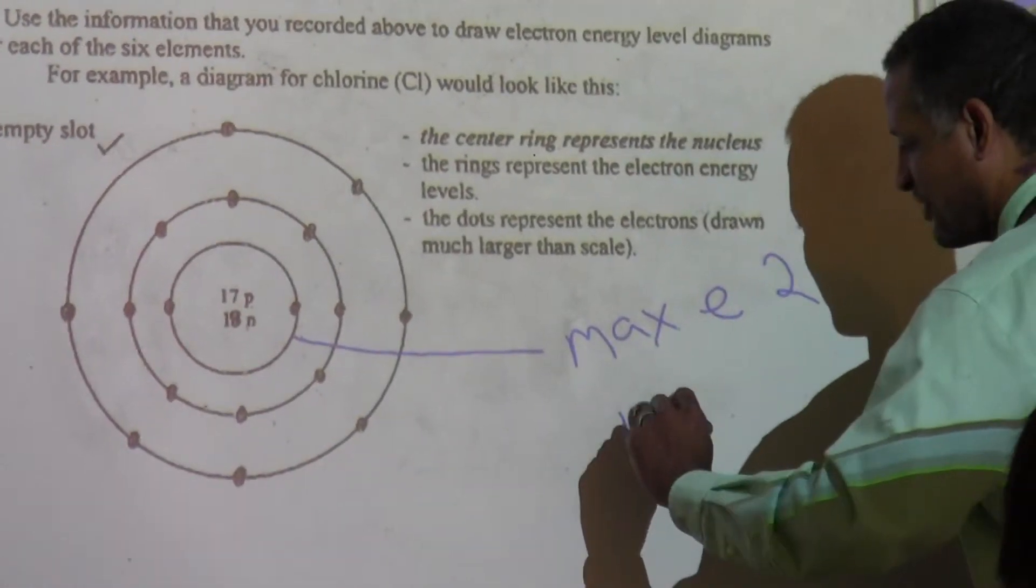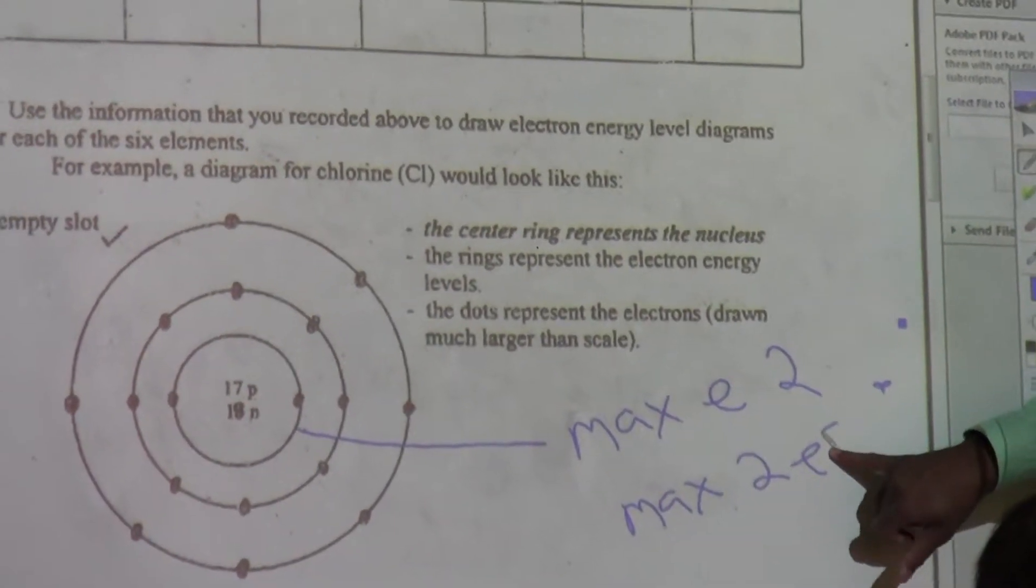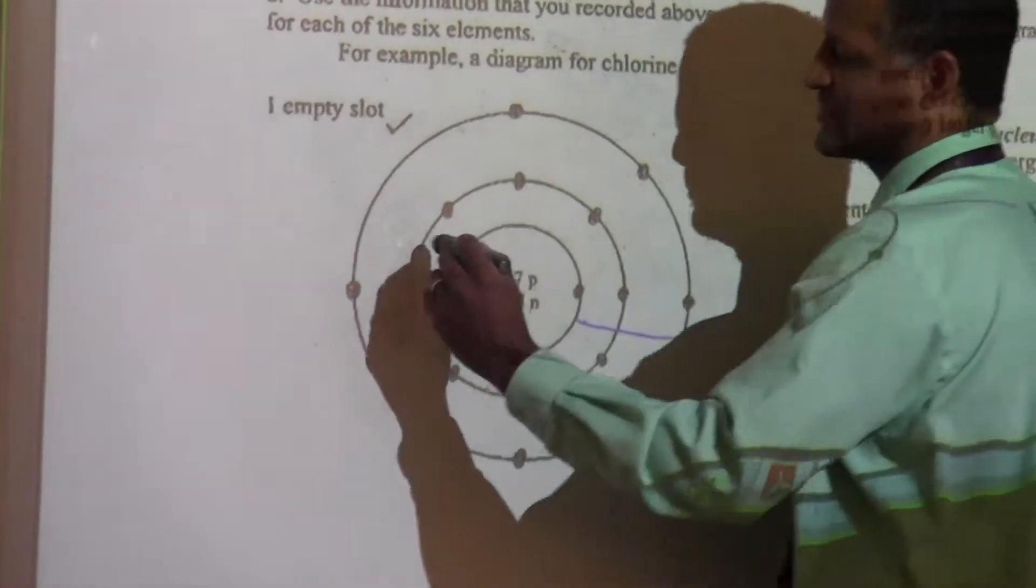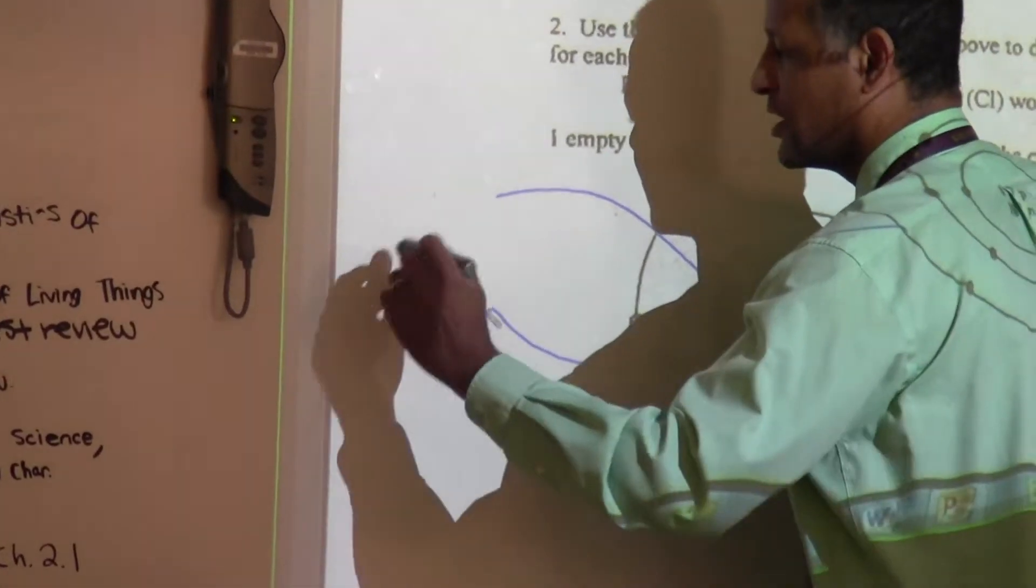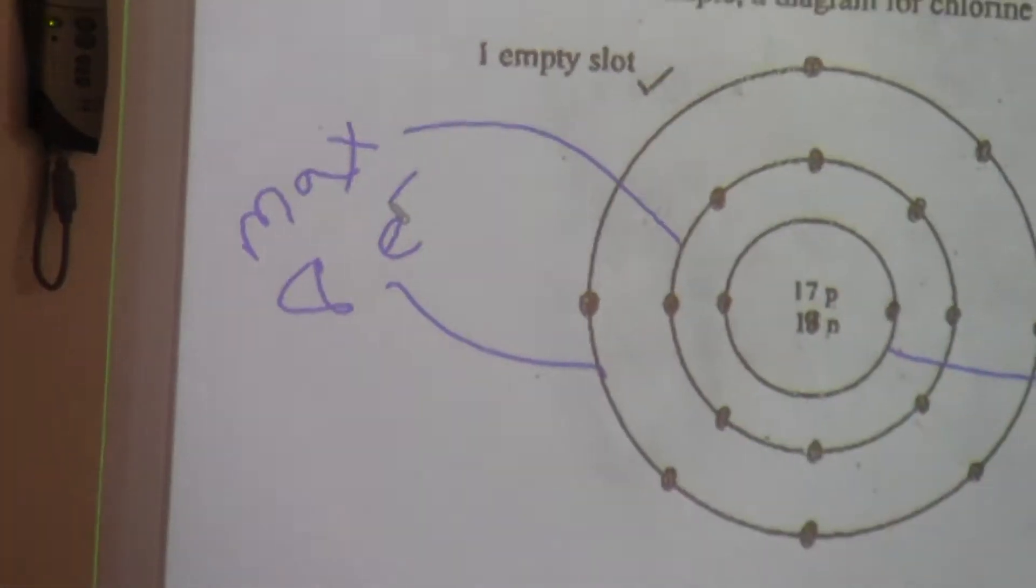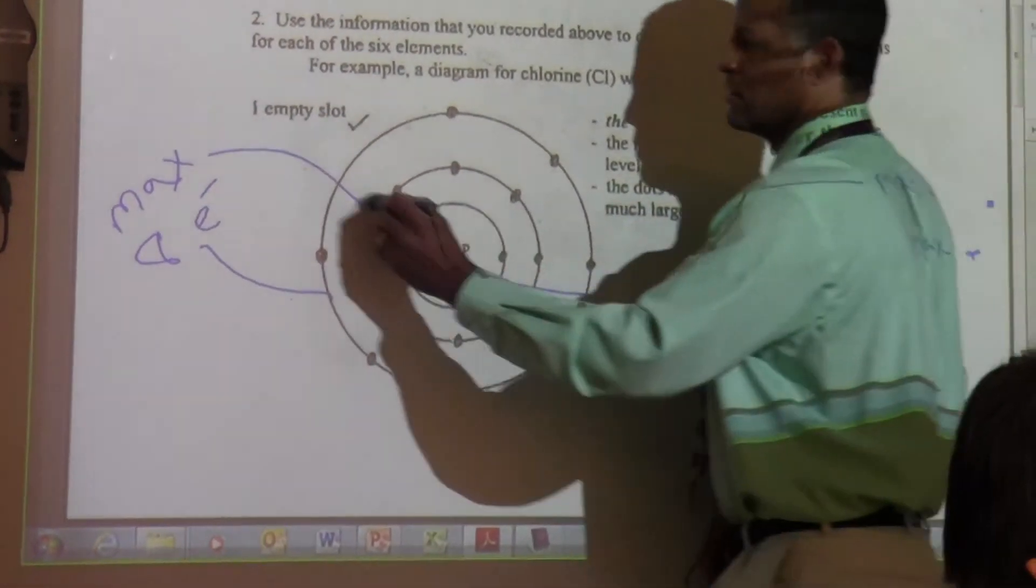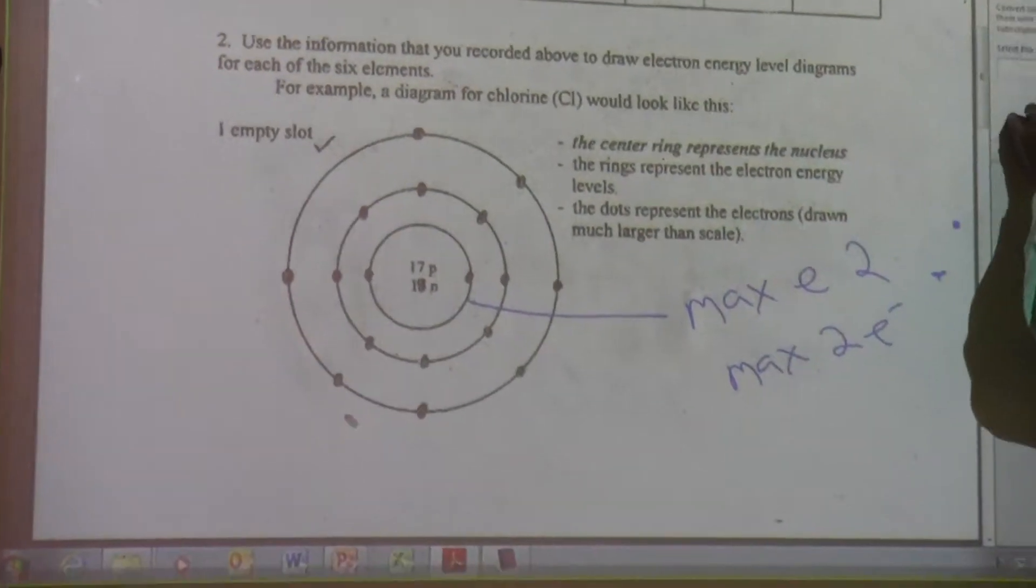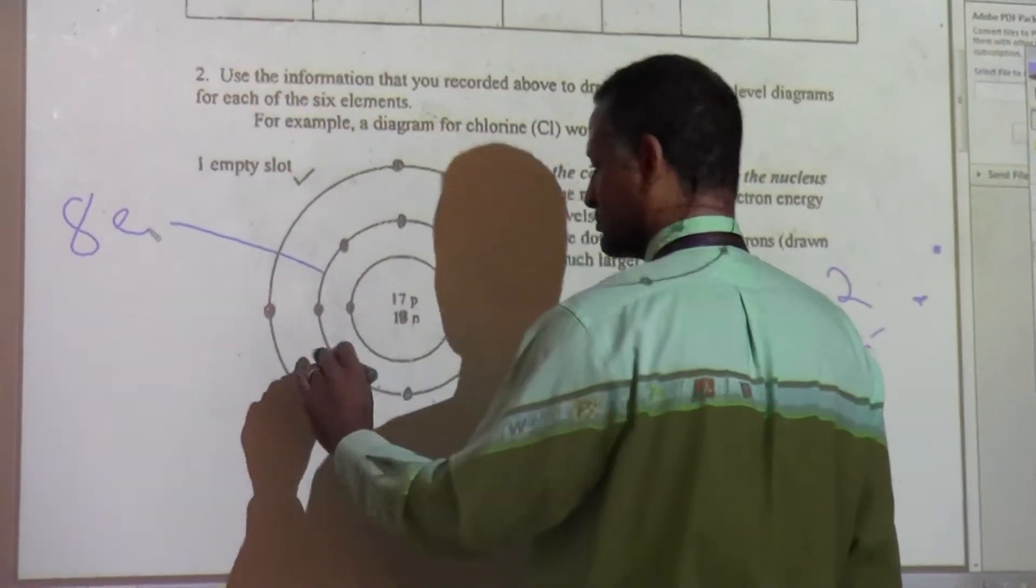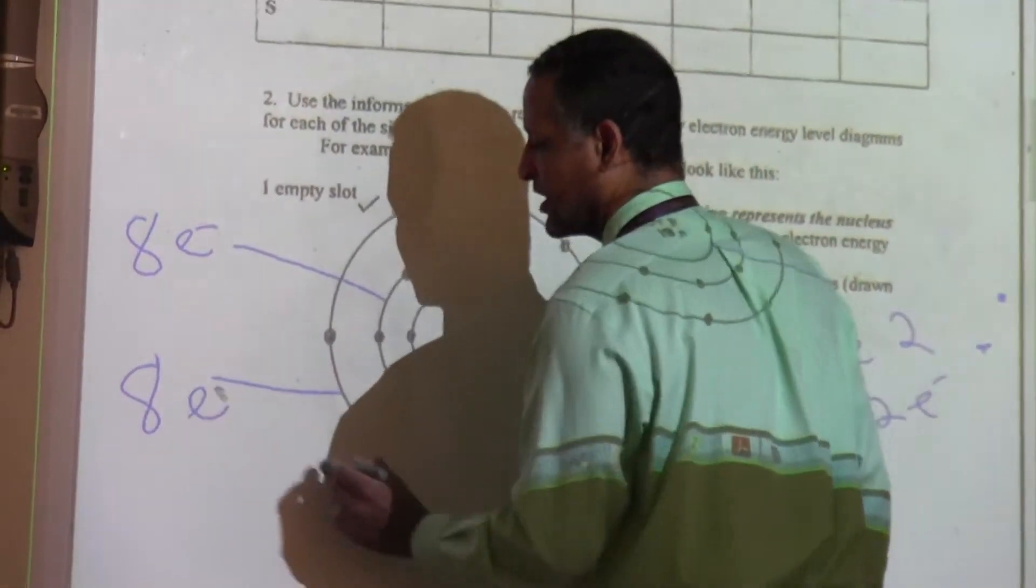I'm writing the symbol 2e, e with a little negative charge, because electrons are negative. Okay, for the sake of this exercise, alright, the max is going to be 8 electrons, for this ring and that ring. I think I could write that better. Okay, there's my little symbol for that.